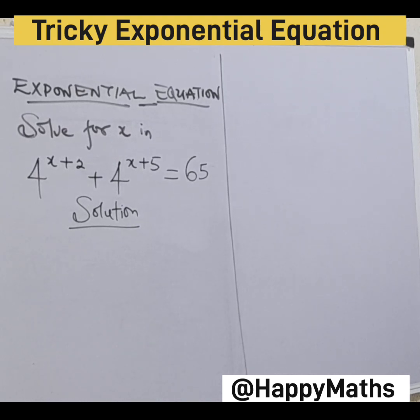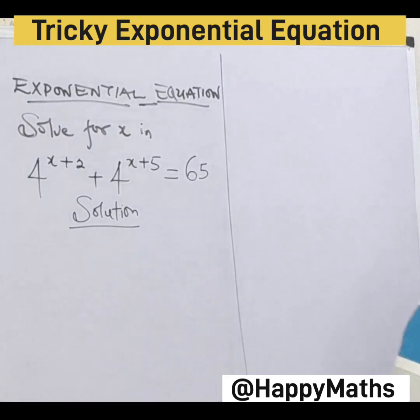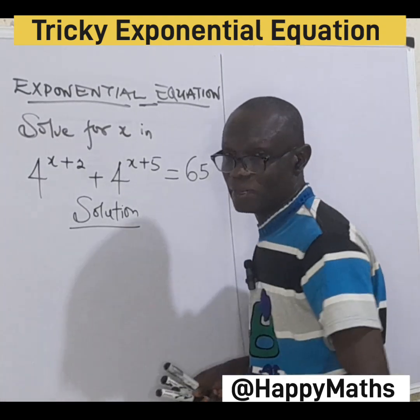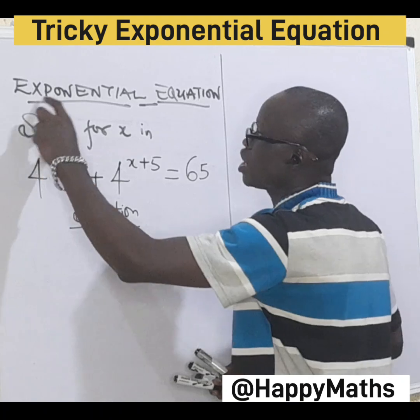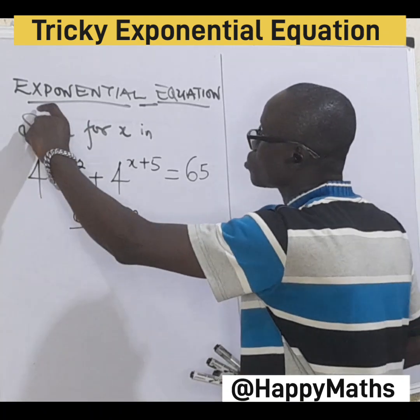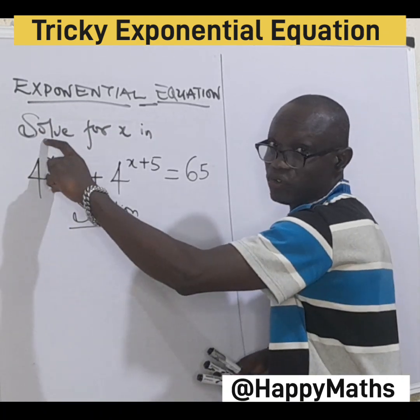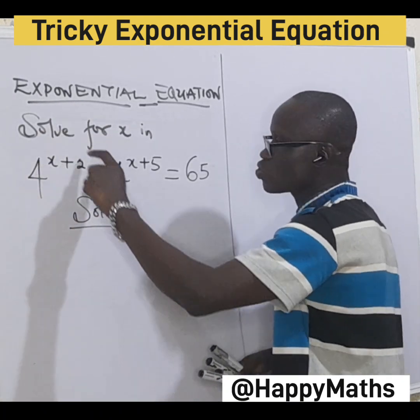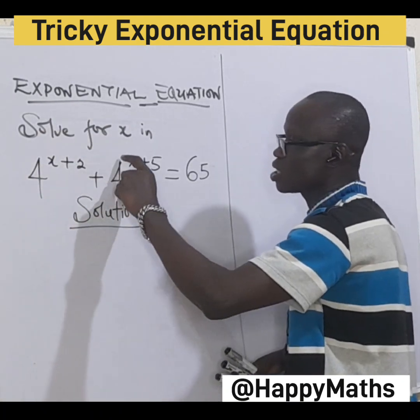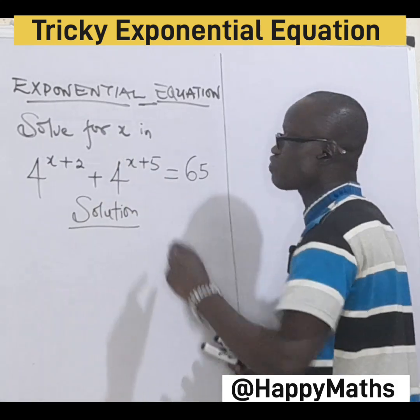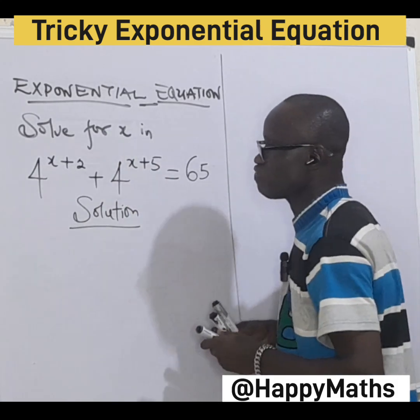Hello, hello esteemed viewers, this is Sappy Mouse on the platform. Today we are solving an exponential equation: 4s by s plus 2 minus 4s by s plus 5 equals 65.